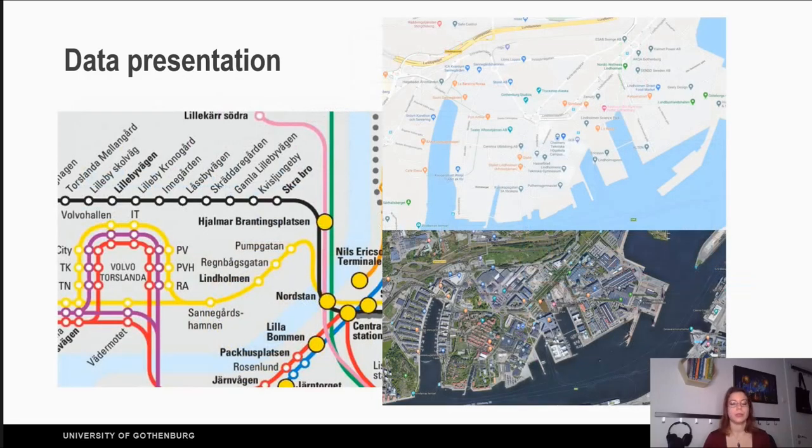Similarly we can use different representations of the same data based on what we want to convey. For example, here is a map of the same place of Lindholmen at Gothenburg. On the left is the transportation map, so we care about the bus stops and not the details of the area.